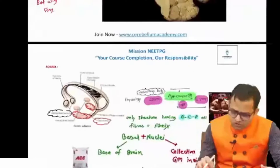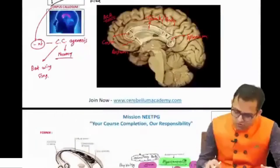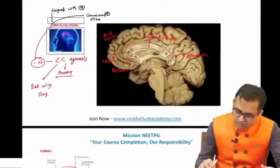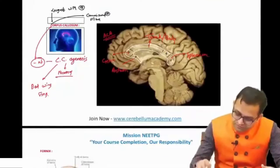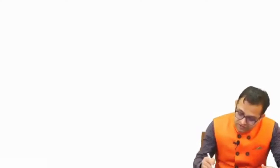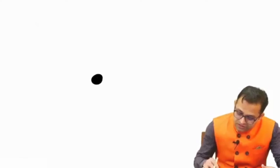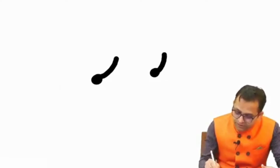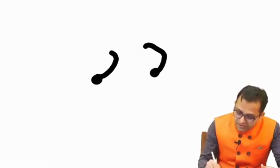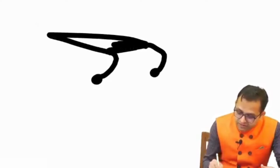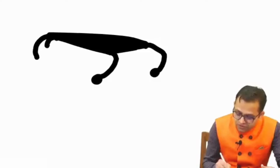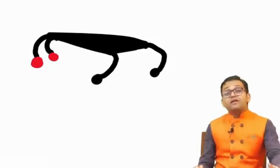So it is a very small structure, very simple to remember. The fornix starts from the hippocampus, makes the posterior column. They meet together making the body, and then again divide into the anterior column, ending into the breast-like elevation called the mammillary body.